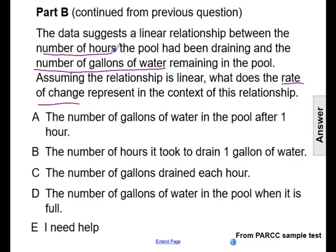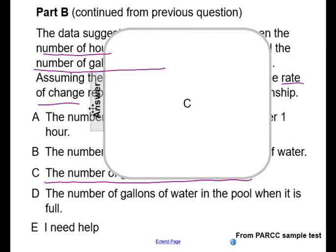So we're looking for that change in the number of gallons of water drained in the change in the number of hours, or for one hour if we really simplify and break down that rate of change. So the rate of change is going to represent the number of gallons drained in one hour, making our answer choice C.